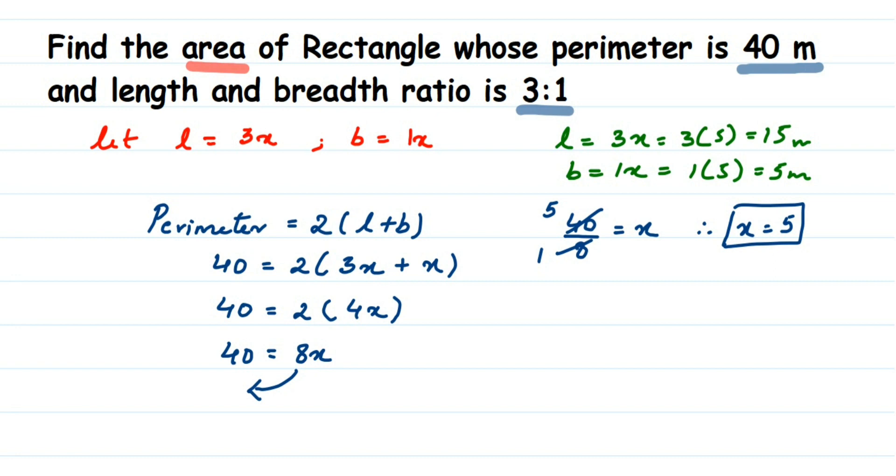Now we can find the area. Area of rectangle formula is length × breadth. Length is 15 and breadth is 5, so 15 × 5 = 75 square meters.